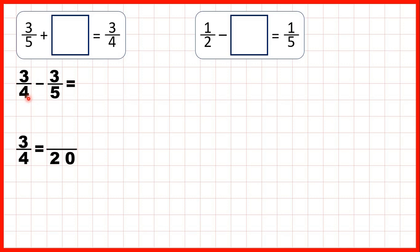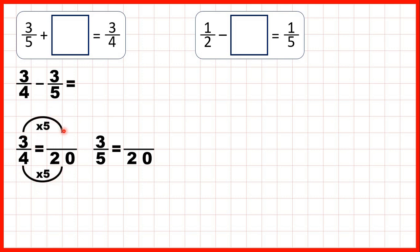20 is in both the 4 and the 5 times table, so because 20 is a common multiple, we can find fractions equivalent to 3 quarters and 3 fifths which have a denominator of 20. 4 times 5 is 20, and what we do to the denominator we do to the numerator as well, so 3 times 5 is 15. Then 5 times 4 is 20, and 3 times 4 is 12.